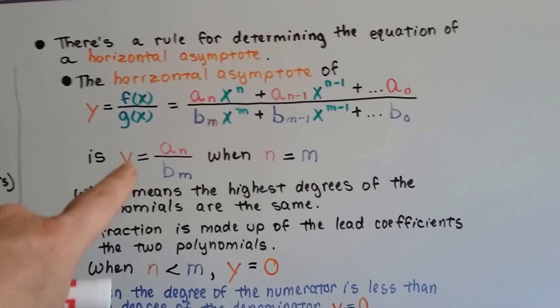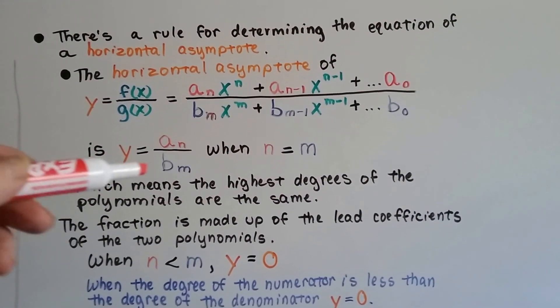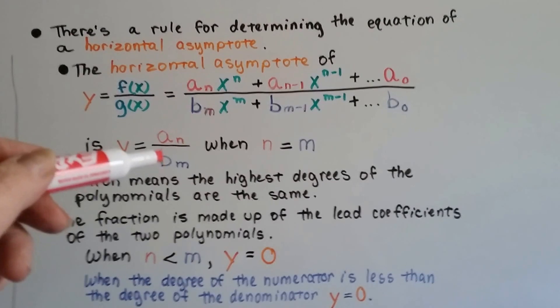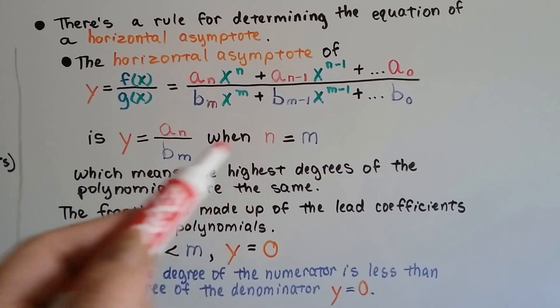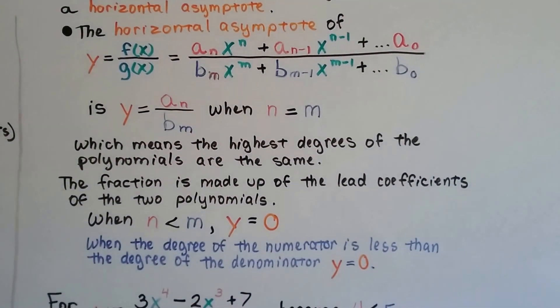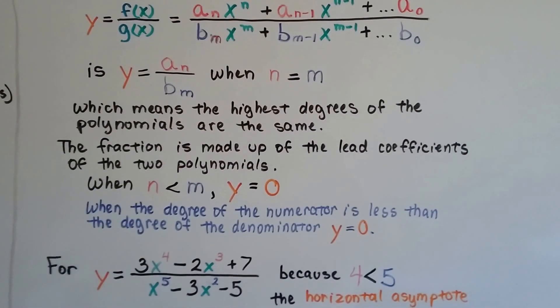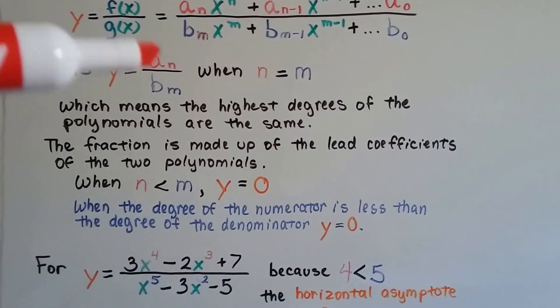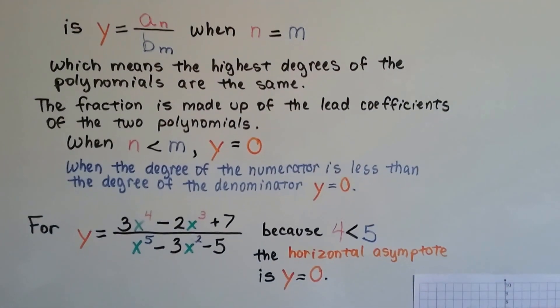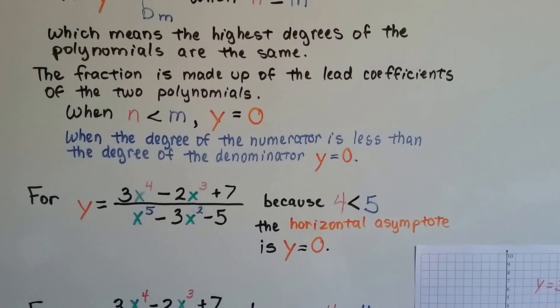Y is equal to a sub n divided by b sub m. See that? That's when the n and the m are equal. This means that the highest degrees of the polynomials are the same, and the fraction is made up of lead coefficients of the two polynomials.